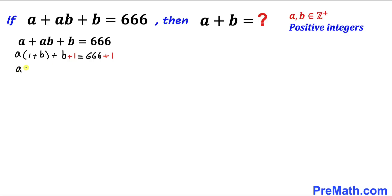Therefore I can write this as a times (b plus 1) plus 1 times (b plus 1) equals 667. Now we can see b plus 1 is in common. Therefore, let me factor out: (a plus 1) times (b plus 1) equals 667.